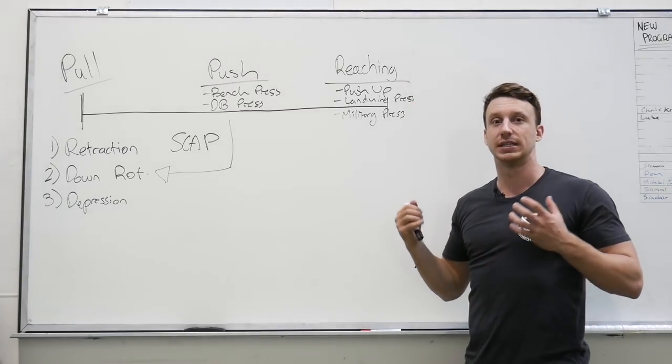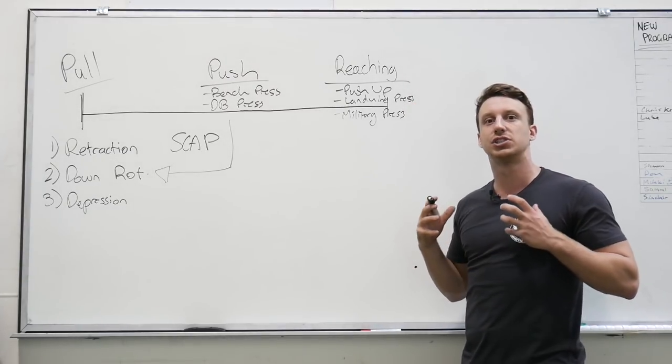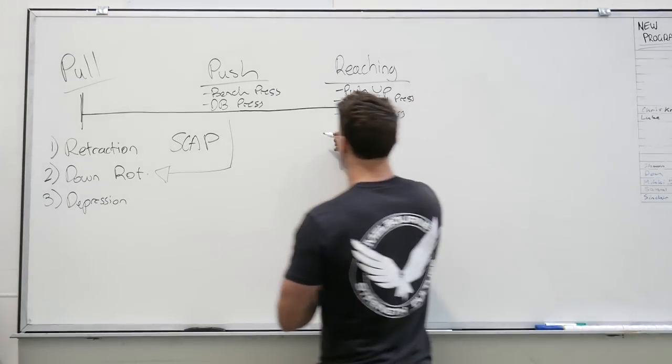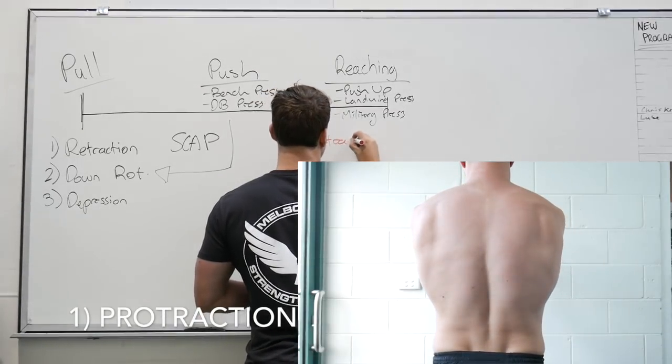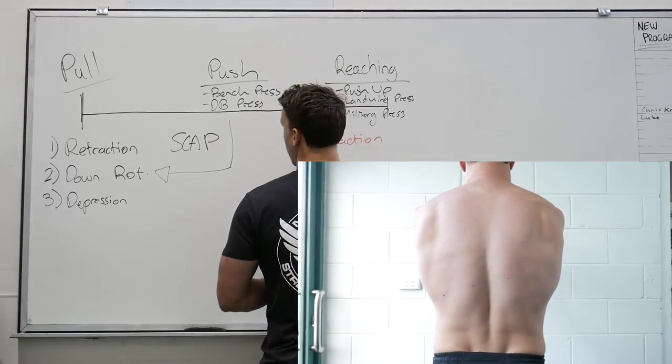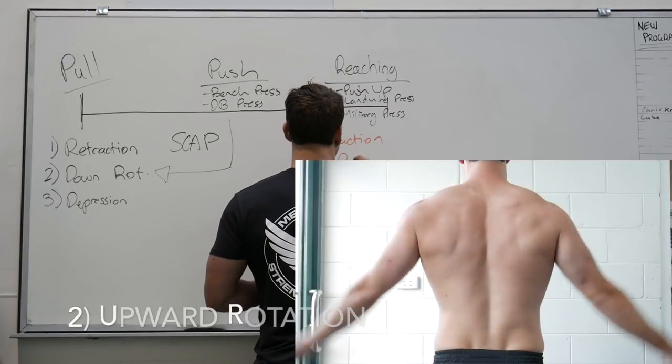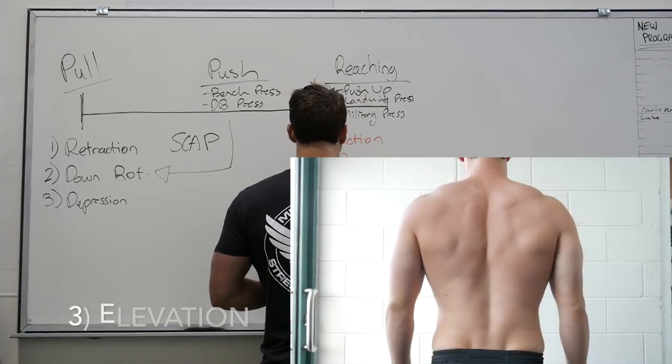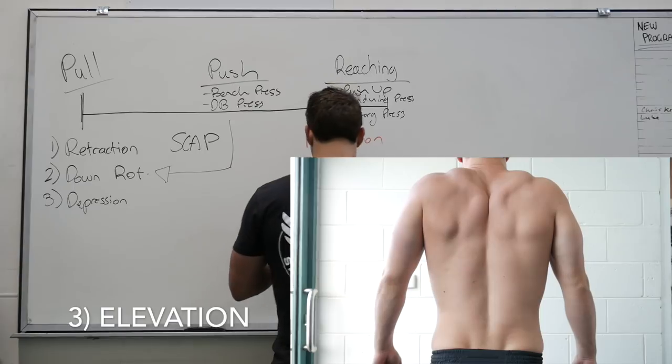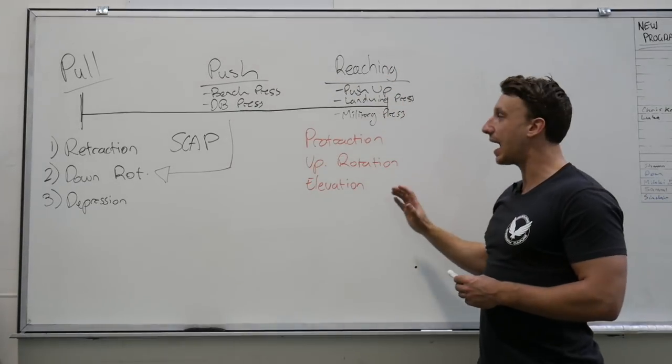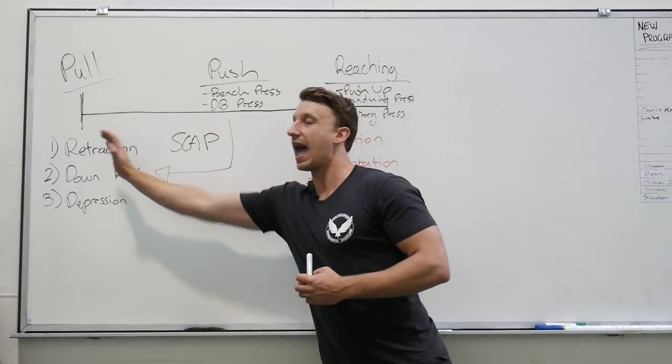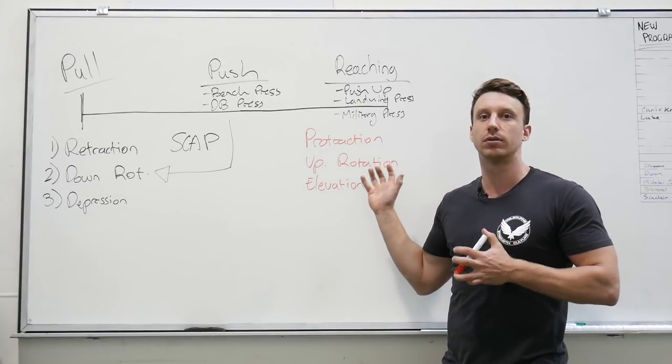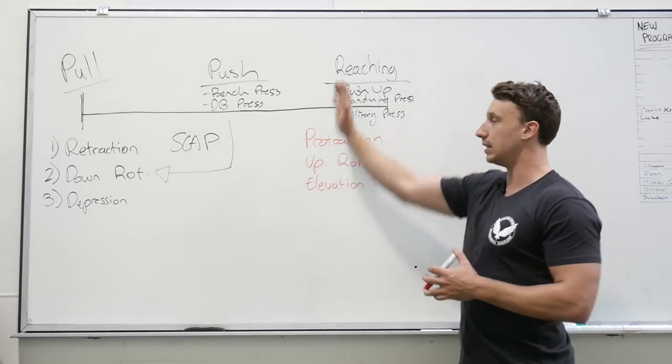Now what these reaching actions actually allow us to do is they allow us to stabilize our shoulder blade through a full range of motion and that motion is protraction, upward rotation and elevation. So these reaching movements actually oppose both the push and the pulling categories. This is where a lot of the benefits in terms of shoulder health and injury prevention actually lie, in the reaching category.